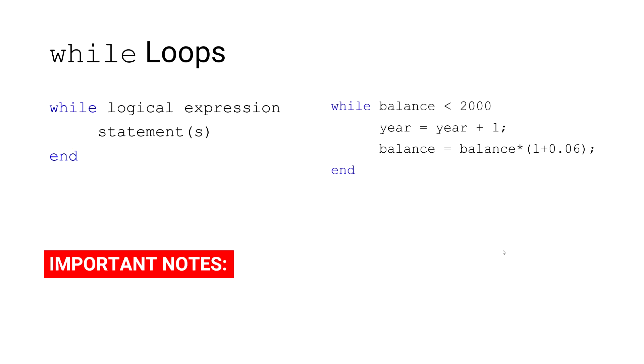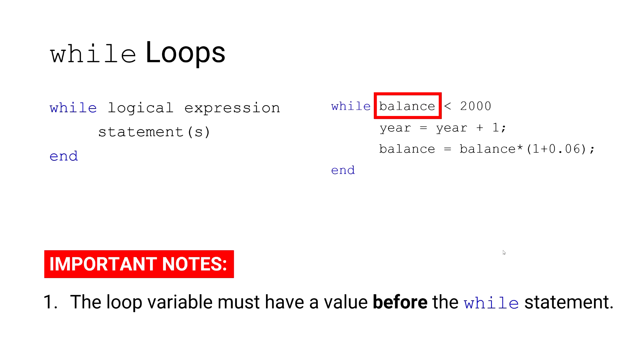Now, I'd like to make two important notes here. First, the loop variable, in this case our balance, must have a value before the while statement, and that's currently missing. And this is because if we don't know what the balance is, then we can't determine if it is less than $2,000 or not. So we need to initialize our balance.